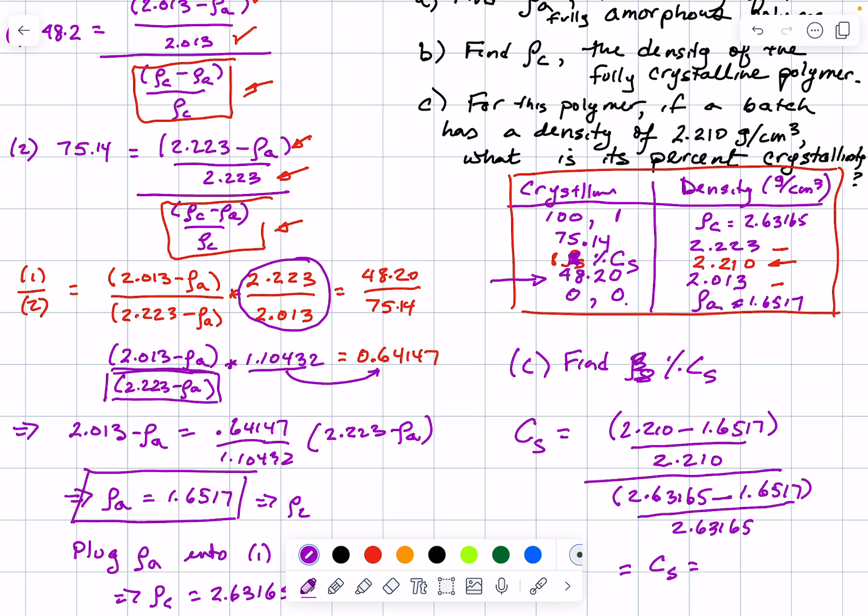When you do that, you will get that Cs equals 0.6884.